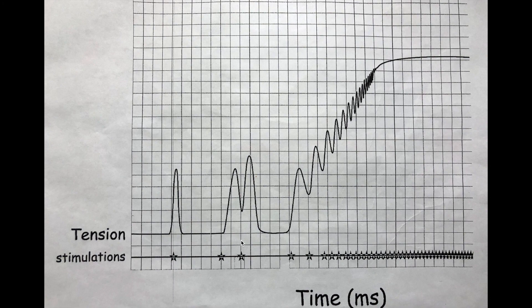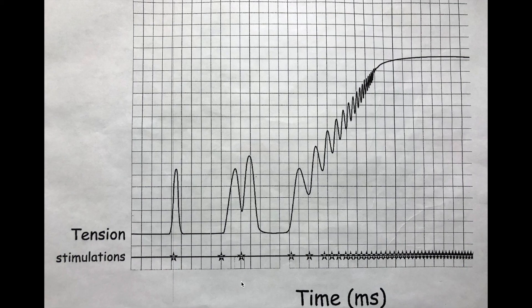When we look at these two stimuli here, one stimulus created one muscle twitch. Now we have two stimuli put close together. What part of the muscle twitch was affected? It wasn't the latent period and it wasn't the contractile period — it was the relaxation period. The relaxation period was cut short. We basically sent another stimulus to the muscle before that muscle fiber had fully rested. So why does it create a higher tension curve for the second stimulus?